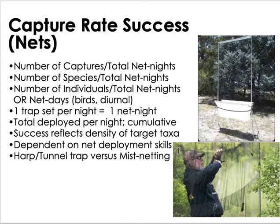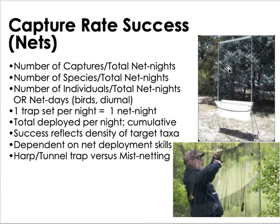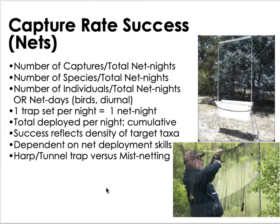Harp traps are used for capturing insect bats — because nylon is used and the echolocation vibrations pass through it, making it harder for insect bats to detect. Mist netting is used for birds, and deployment skills are critical. Researchers conducting bird biodiversity studies already know where to establish their nets effectively.